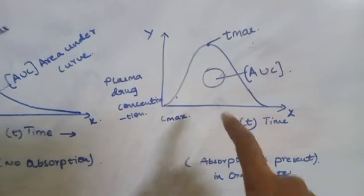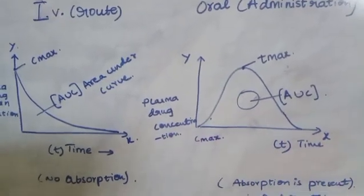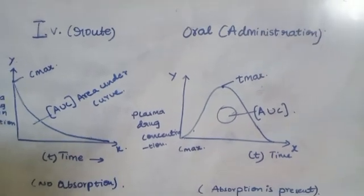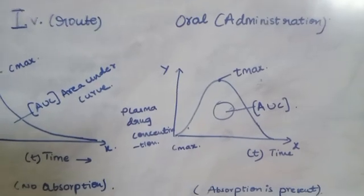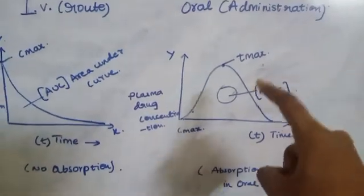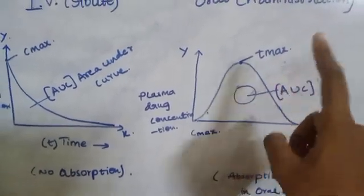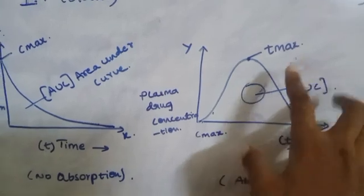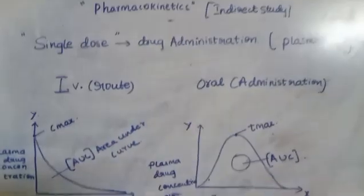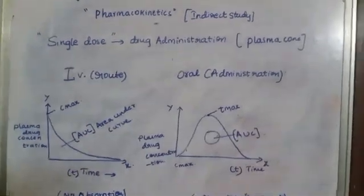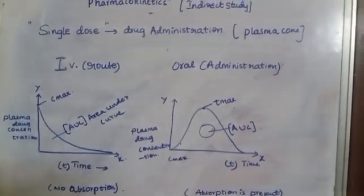Because this is oral administration, absorption occurs. Remember, this is the most important graph to identify whether the route is IV or oral. Tmax is the time at which the drug concentration is maximum. This concludes single dose drug administration in terms of pharmacokinetics in bioavailability studies.